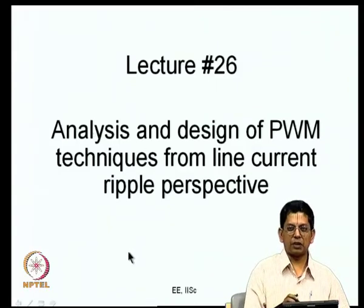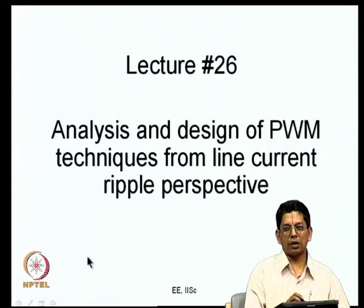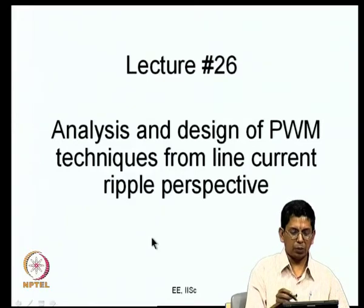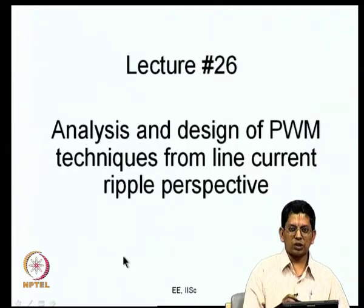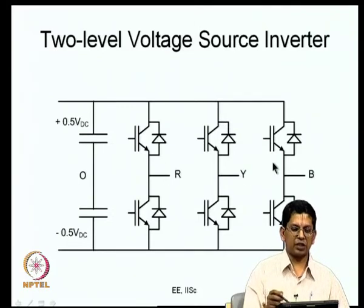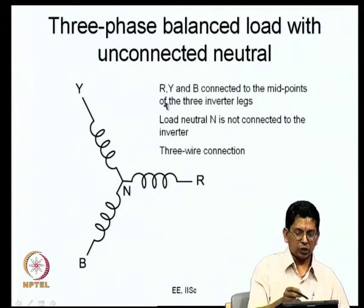We will do an analysis to find out how these methods compare in terms of RMS line current ripple and how they compare, and try to design some hybrid PWM methods which will reduce the line current ripple. This is the voltage source inverter we have been talking about — two devices in each of three legs, with AC side terminals and two DC side terminals connected to a load.